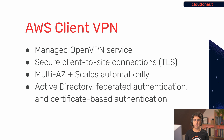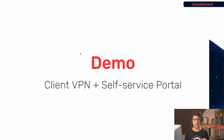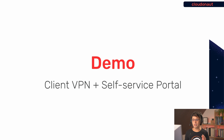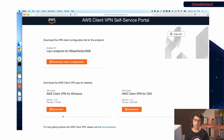In the first demo I want to show how everything works from an end-user perspective — how a DevOps engineer connects to a VPC to SSH into an EC2 instance. It all starts with the self-service portal for the VPN client, where users can fetch the VPN configuration file and the VPN client itself for Windows or macOS.